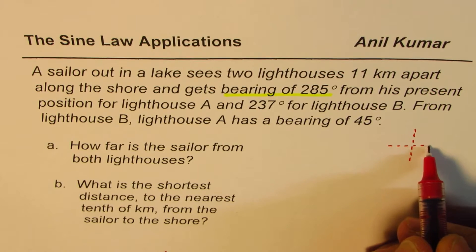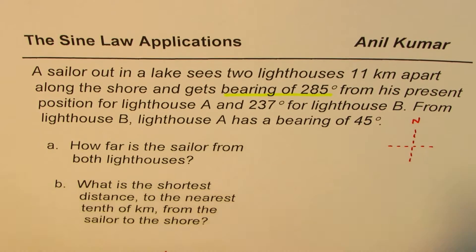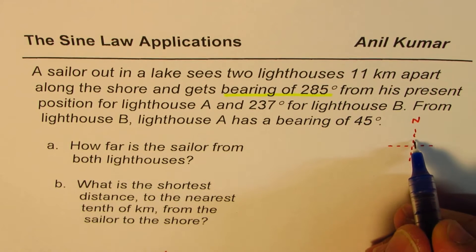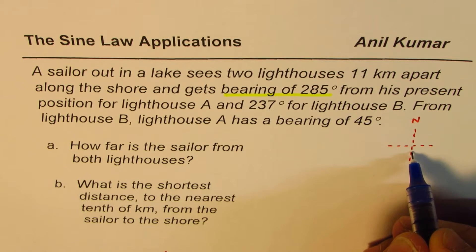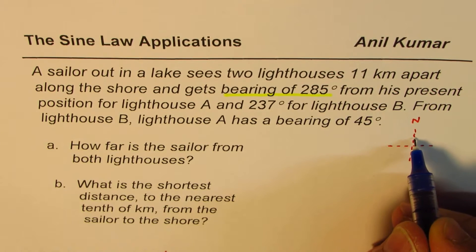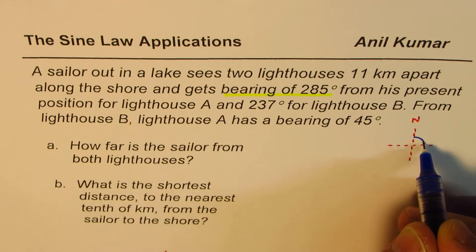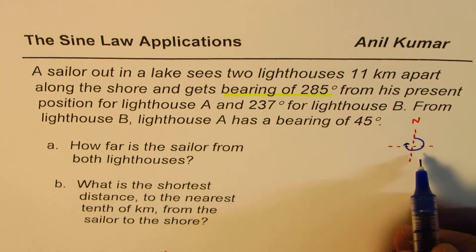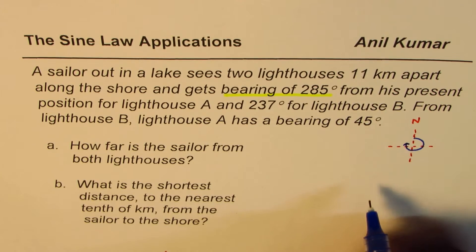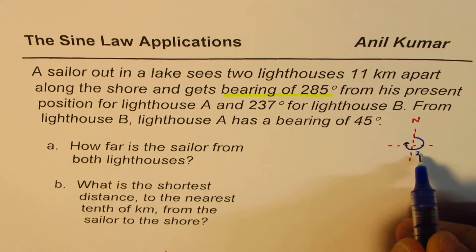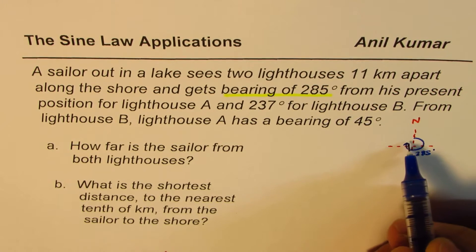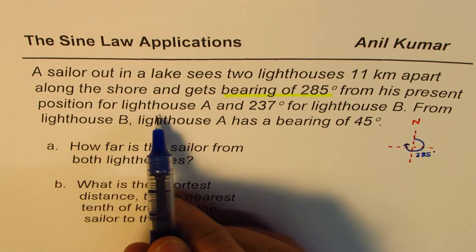Just make your coordinate points like this, where we'll treat north always on top of the paper. When I say that the bearing angle is 285 degrees, it really means if you start from north — that is 90, 180, 270 — so it's slightly more than 270, going along this side. That becomes 285 degrees.